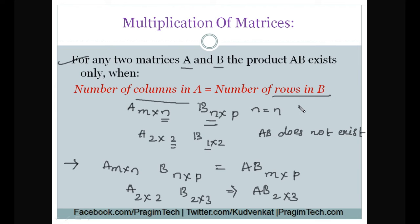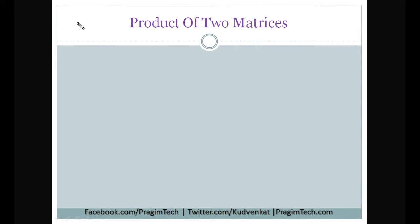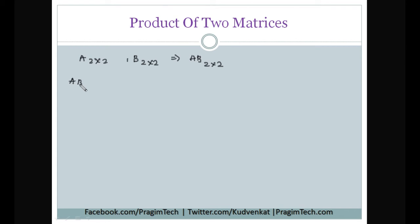Now let us see how to perform multiplication between two matrices. We have matrix A of order 2 by 2 and matrix B of order 2 by 2, so we can say that AB exists and will be of order 2 by 2. How do we obtain the resultant matrix AB?